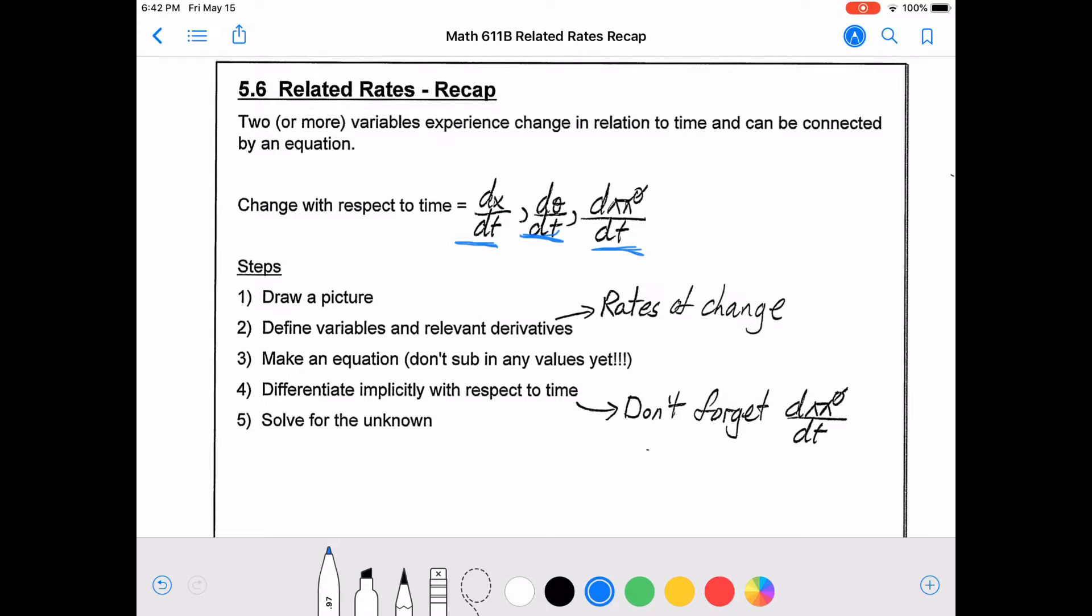When we do these questions, like with most word problems, we try to draw a picture first, then we'll define our variables and our relevant derivatives. So the relevant derivatives will be the rates of change that are mentioned in the question. Then we make an equation. We don't sub in any values yet. Differentiate implicitly with respect to time. Don't forget to tack on your derivatives because we are differentiating implicitly, and there's the chain rule at play. And finally solve for the unknown.